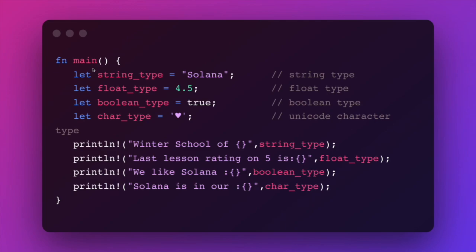This is because Rust has something called an inference engine. It's quite smart — it does more than just look at the type of the value during initialization; it also looks at how the variable is used afterwards. So we can essentially define variables without specifying the data type. The `let` keyword might seem familiar to JavaScript developers, but in JavaScript variables created with `let` are mutable by default, meaning we can reassign their values.